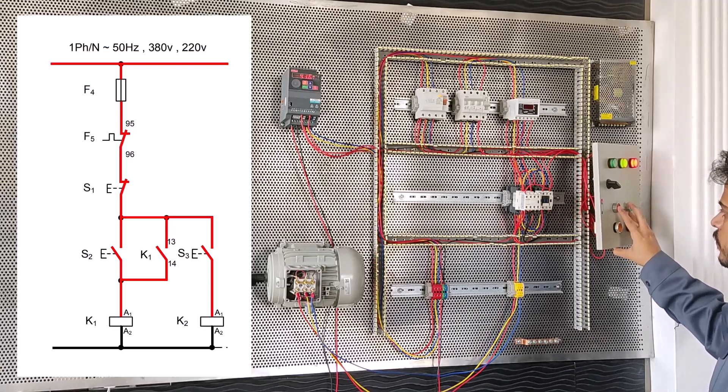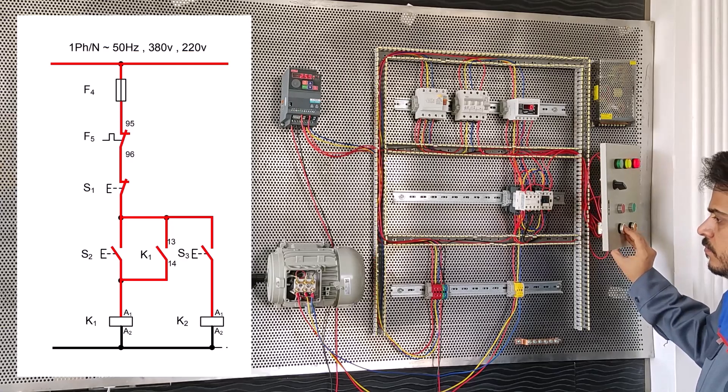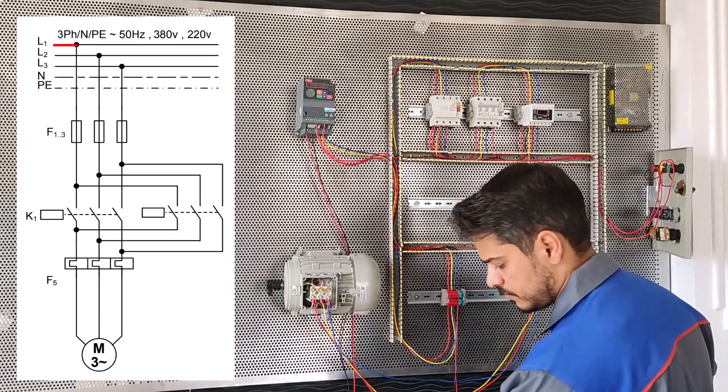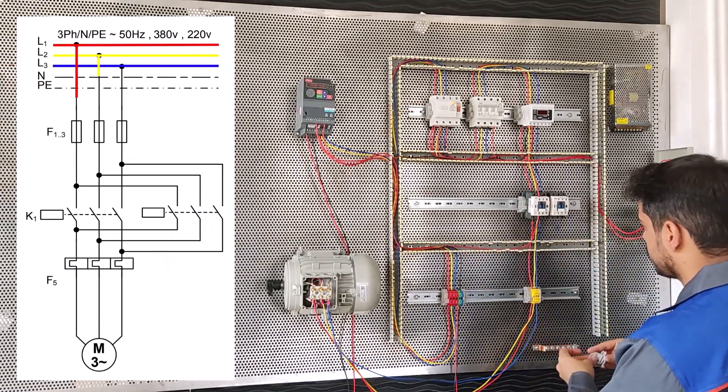Hello, in this video we want to explain to you how to start a motor instantly and permanently using two conductors. First we wire the power circuit.